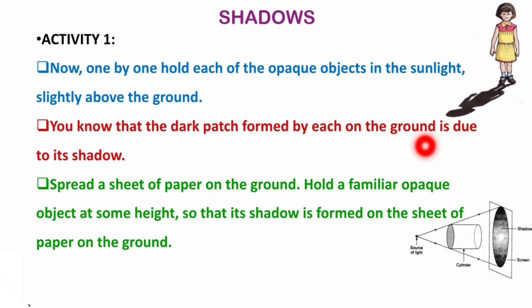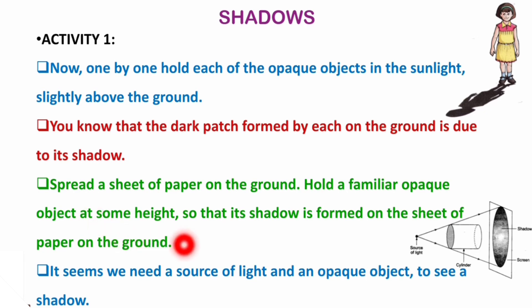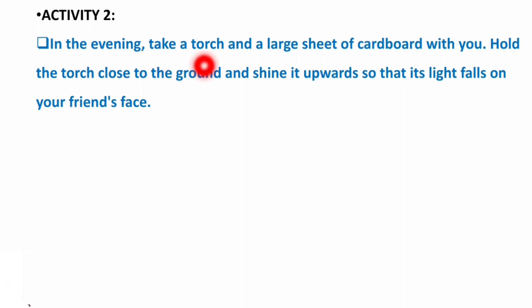We need a source of light and an opaque object to see a shadow. If there is no source of light, a shadow cannot be formed. Even if you take an opaque object, only then can a shadow be formed. For a transparent object, sunlight passes through it, so the shadow will not be clear. In the evening, take a torch and a large sheet of cardboard — hold the torch close to the ground and shine it upwards so that the light falls on your friend's face.